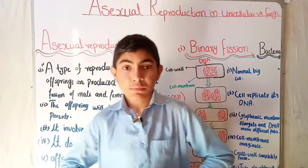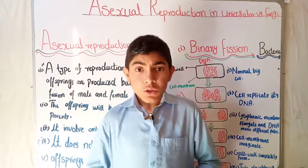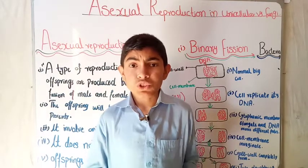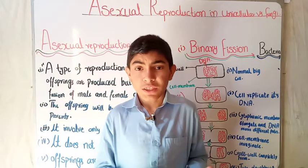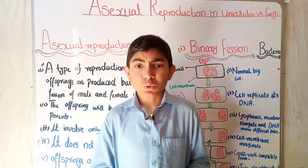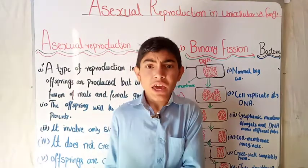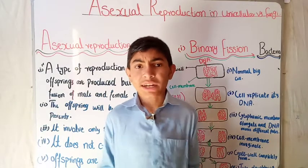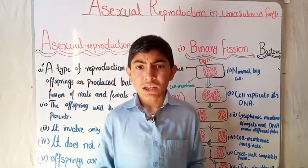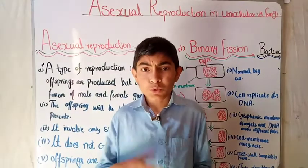Assalamu alaikum, welcome to my YouTube channel. I am a biology student. Today I have another topic for you: the reproductive system of class 10 biology. The reproductive system is a system of our body through which a body produces offspring. Everybody has the quality to produce offspring in order to maintain its generation. Like a human — a father dies, then his son comes, then his grandson comes, and the chain passes from one generation to the next.